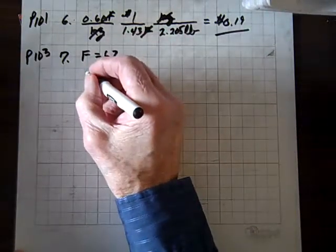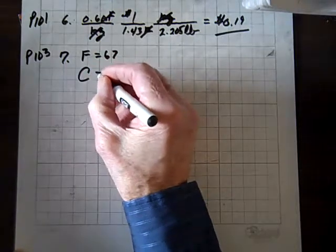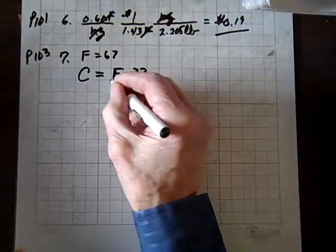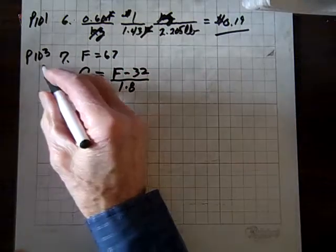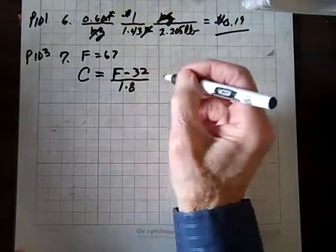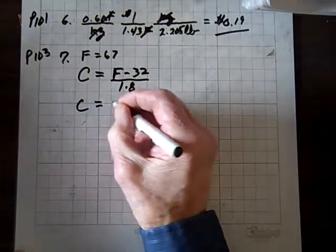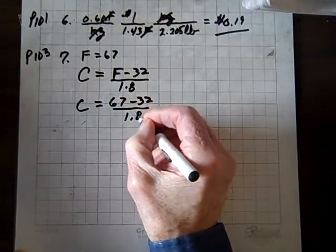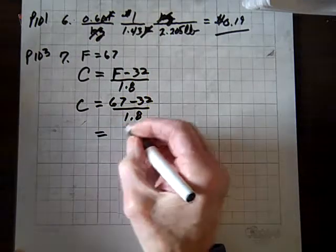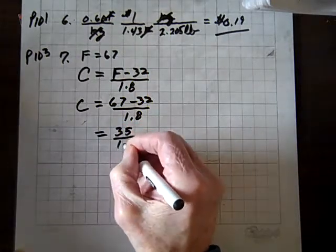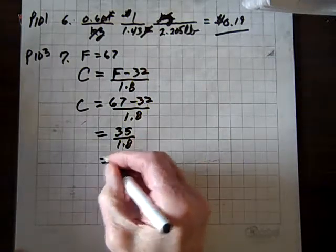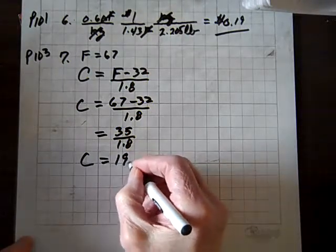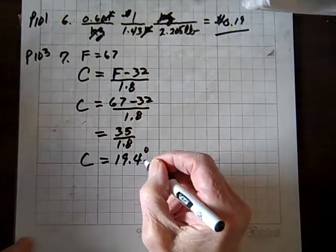We know that the temperature in Celsius equals the temperature in Fahrenheit minus 32 over 1.8. You'll find that formula on page 103. So we have C equals 67 minus 32 over 1.8, which equals 35 over 1.8, which equals 19.4 degrees Celsius.